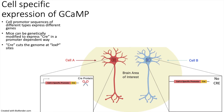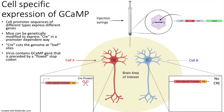The Cre gene was originally discovered in bacteria and the function of the Cre protein is to cut parts of the DNA that contain LoxP sites. LoxP sites are not present in animal DNA so Cre expression alone doesn't do anything. Once the mouse reaches an appropriate age, they are injected with a virus that contains the GCaMP gene, but it is preceded by a stop codon that has LoxP sites on both sides of it.